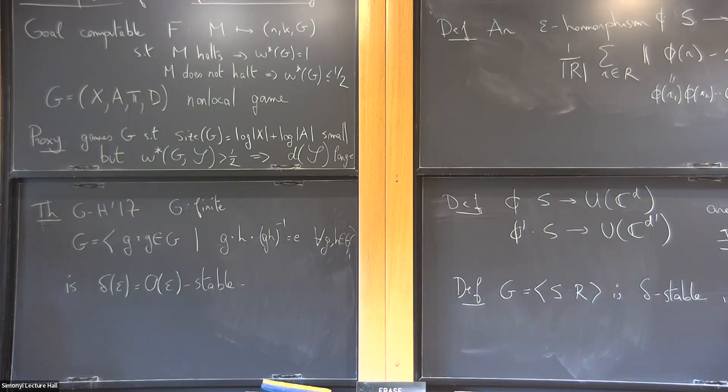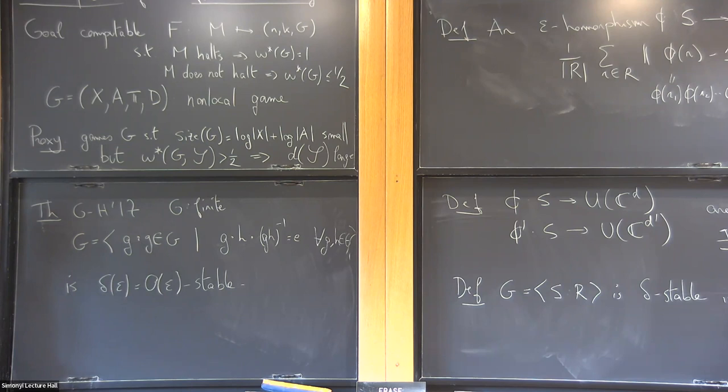The question of efficient stability is whether for any particular group of interest — including finite groups — we can obtain a compact presentation of the group that remains stable with ideally the same kind of modulus but with much fewer generators and relations.